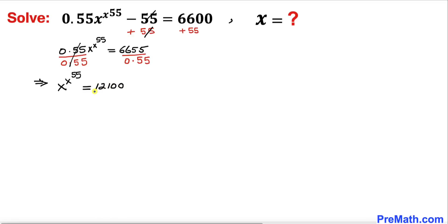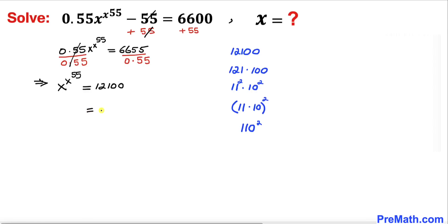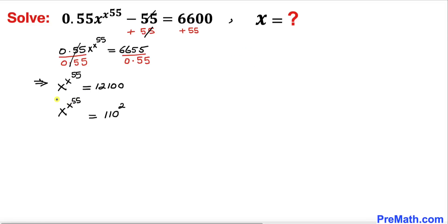Now let's focus on 12100 on the right hand side. We can see that this number can be written as 121 times 100, both of which are perfect squares. We can write them as 11 times 10, whole squared, which equals 110 squared. So the right hand side can be written as 110 whole squared.